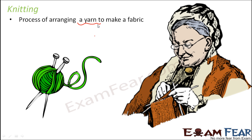The best example you can think of is knitting sweaters. You can check at your house — your mom or granny would know how to knit a sweater. They take yarn of wool and with the help of sticks, they knit them together. They just have one set of wool and with that they knit the entire sweater. So using one set of yarn, you can create the entire fabric — this is knitting.